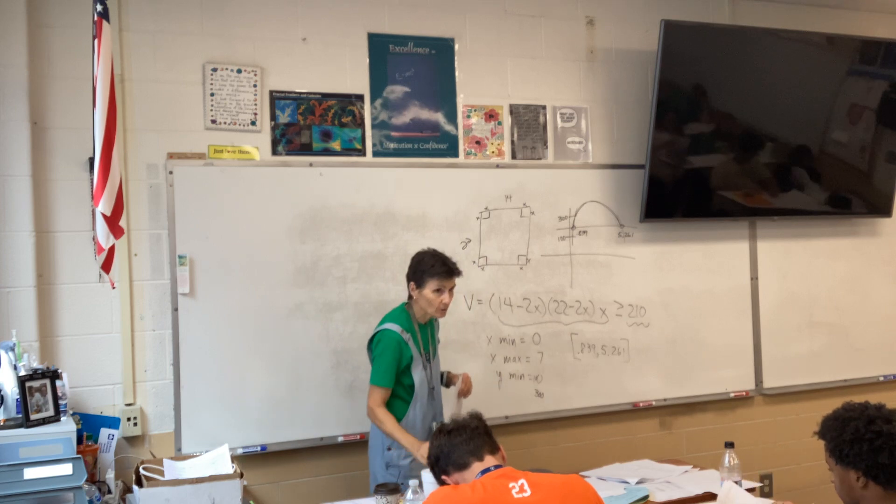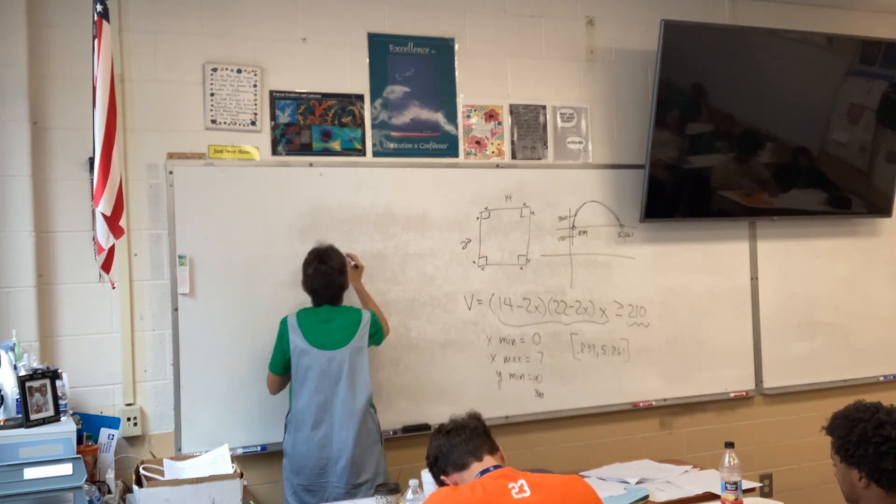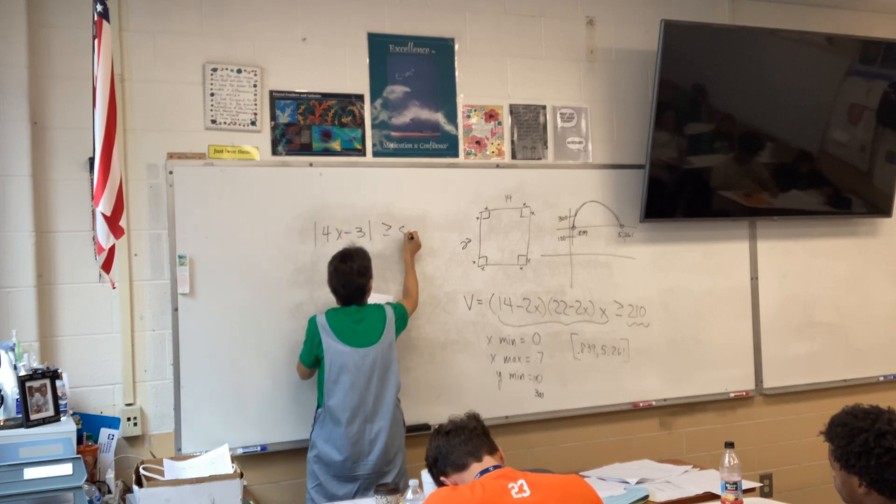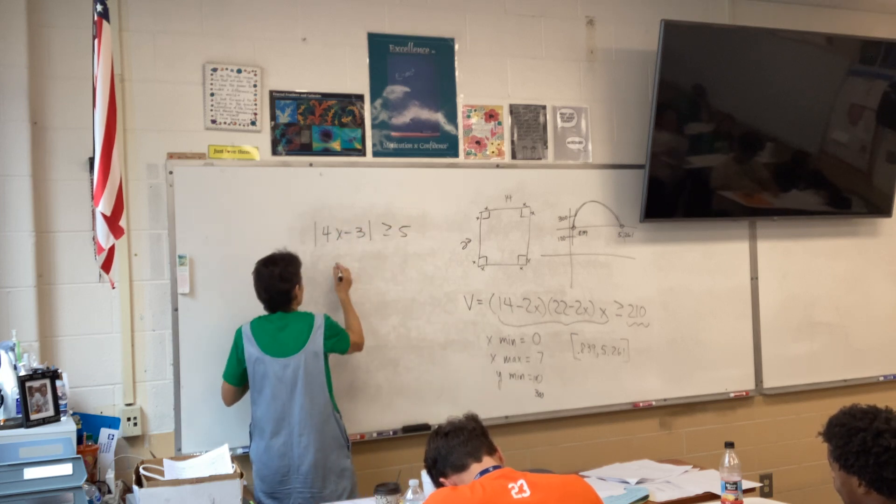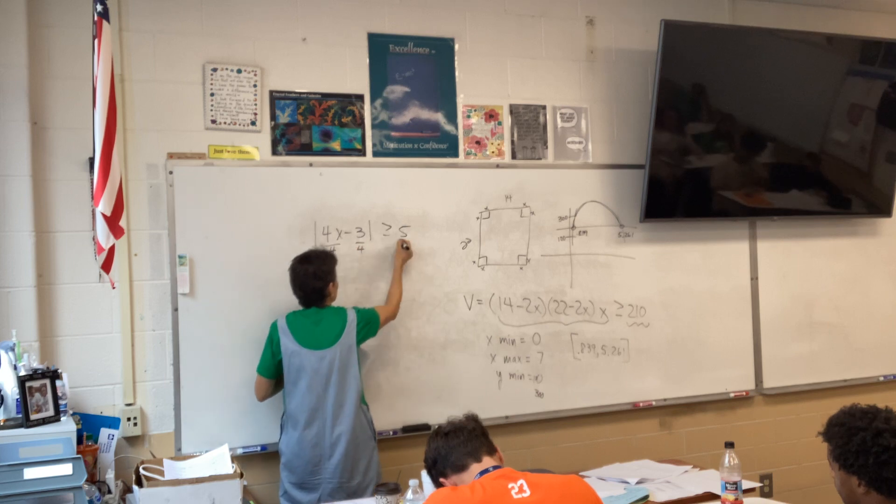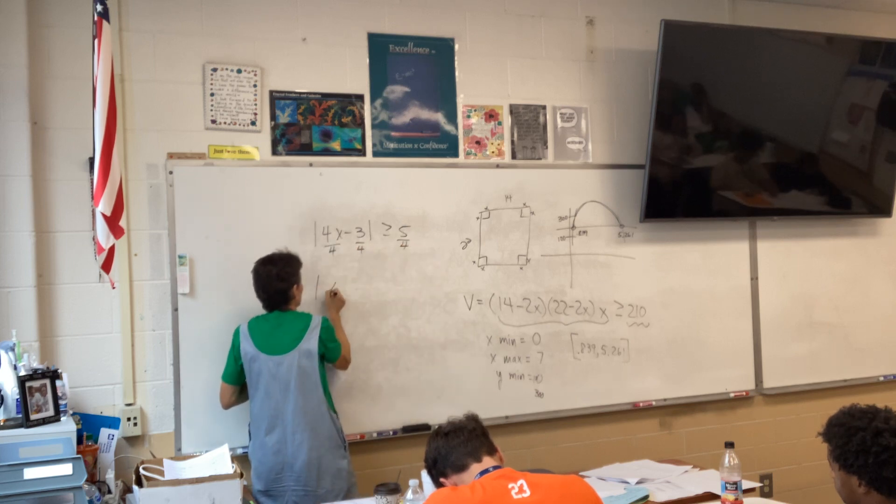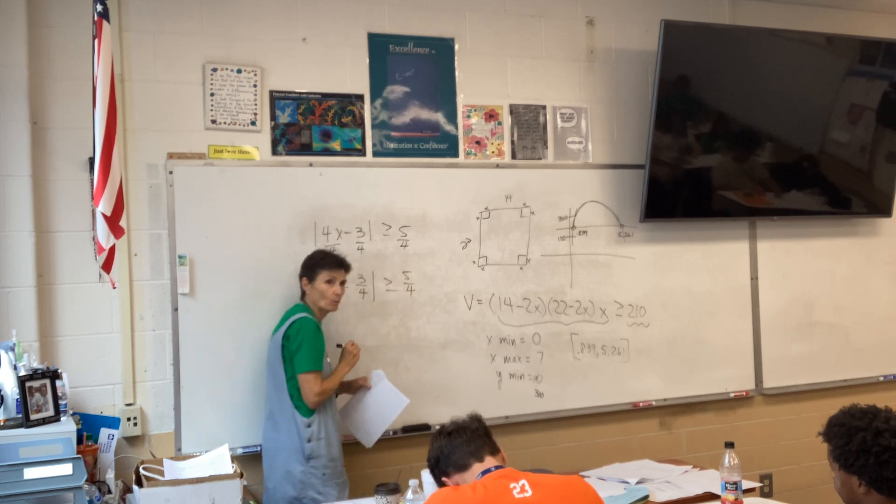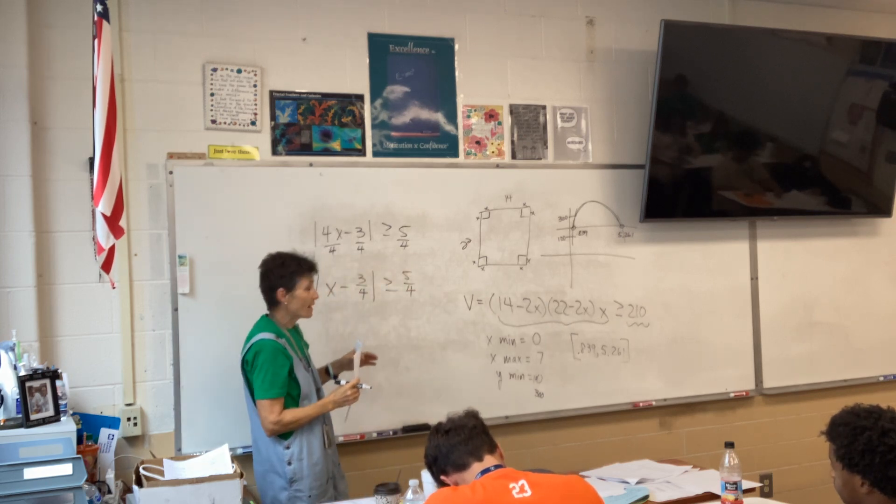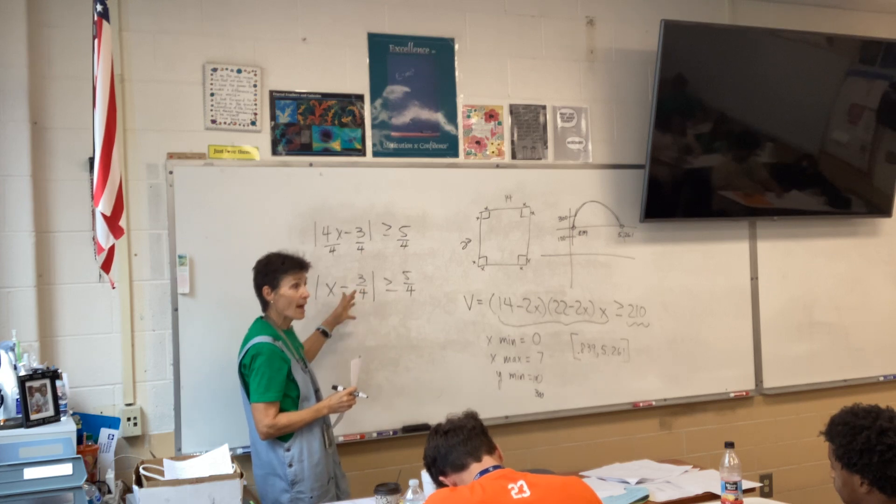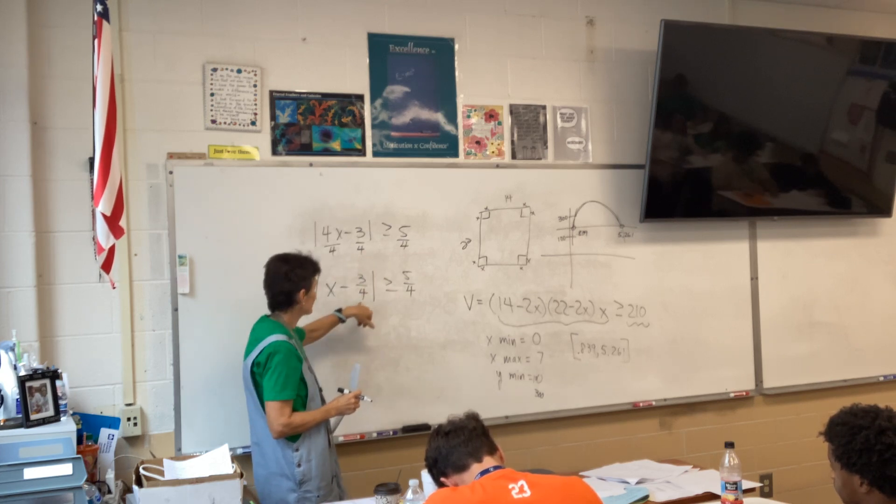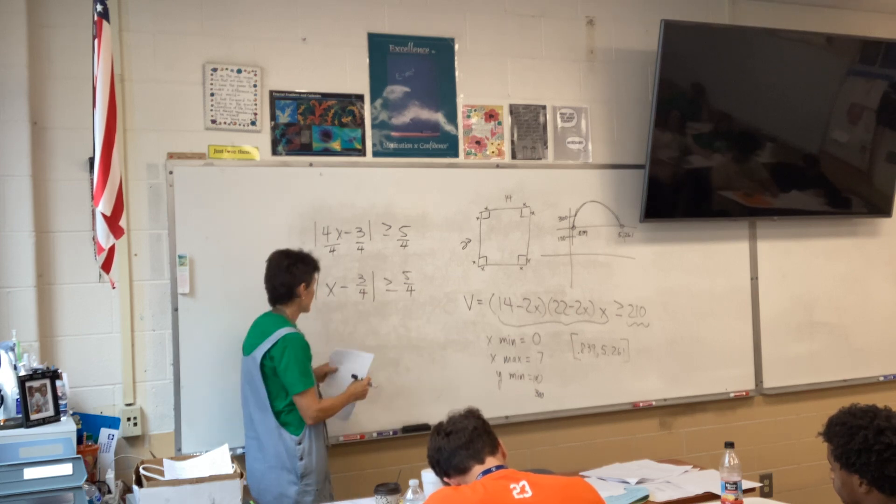I am going to do it the calculus way, the distance way. So, I'm going to start by dividing everything by 4. So, I have x minus 3 fourths is greater than or equal to 5 fourths. And then I'm going to think about this as find all the numbers whose distance from 3 fourths is bigger than 5 fourths.